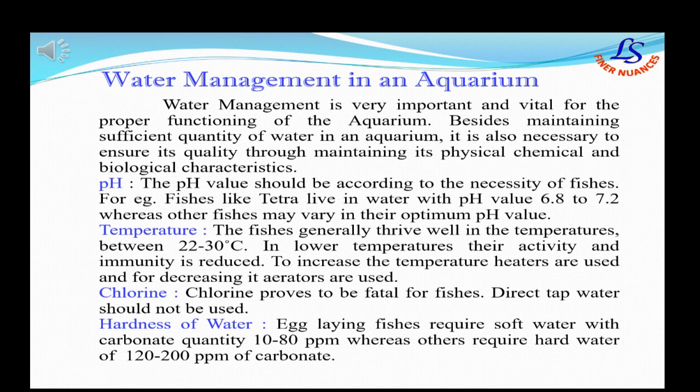Another important aspect is water management in an aquarium. The water must have certain physical and chemical characteristics such as a suitable pH for the fishes, and temperature which should be between 22 to 30 degrees centigrade. Heaters are used to increase the temperature when needed. Chlorine proves to be fatal for fishes. Water hardness should also be controlled, as egg-laying fishes require soft water with carbonate quantity of 10 to 80 ppm.